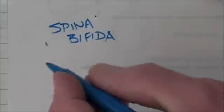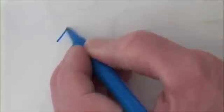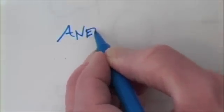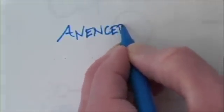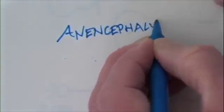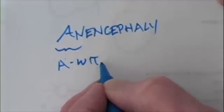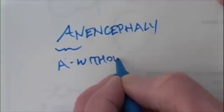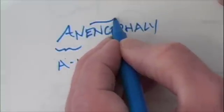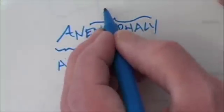What if the anterior end of the neural tube fails to close? Well, this condition is called anencephaly. Anencephaly. An comes from a, meaning without. And encephaly means what? Brain.